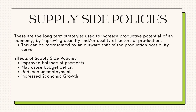Supply-side policies are basically macroeconomic policies which are designed to increase aggregate supply and productive potential of an economy. This can be done by improving the quantity or quality of factors of production. This can be represented by an outward shift of the production possibility curve.